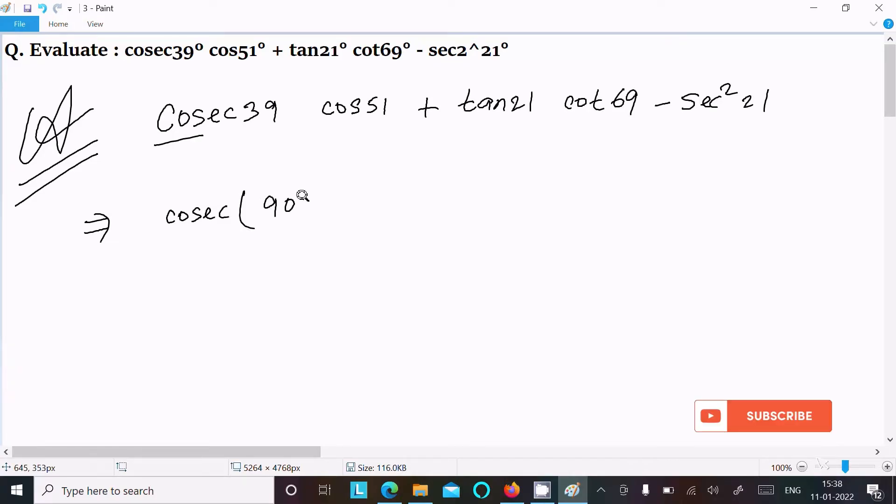If you subtract, it's equal to 39°. So this becomes cos 51°. And the next is tan 21°, and this I am going to change into tan form. So we can write cot as cot(90° - 21°). If you subtract, it equals 69°.